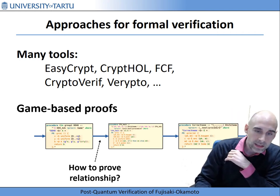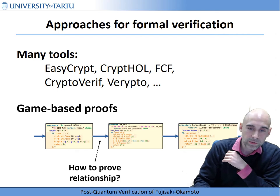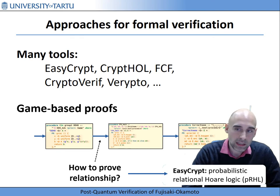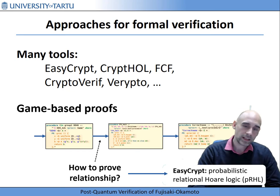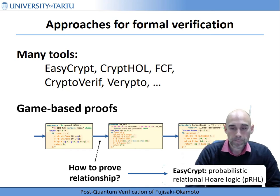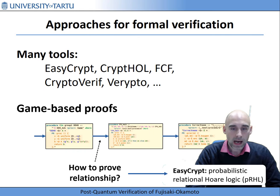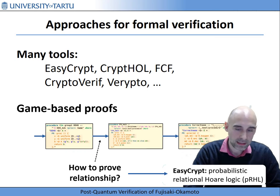In the case of EasyCrypt, the tool uses a logic called pRHL — Probabilistic Relational Hoare Logic — which allows a very fine-grained analysis of the relationship between two programs. Games in the cryptographic setting are formulated as programs. This is also the logic on which the quantum case will later build.